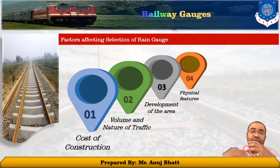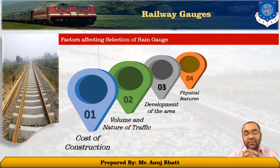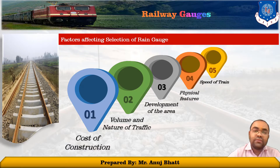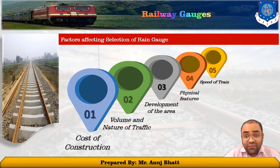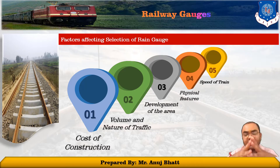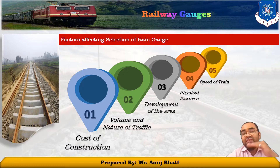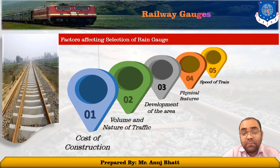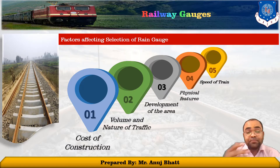This is how different terrain types affect the choice of the particular gauge. The last factor is the speed of the train. The speed of a train is almost proportional to the gauge, as speed is a function of wheel diameter, which in turn is limited by the gauge. The wheel diameter is generally kept as 0.75 times the regular gauge size. To maintain high speed, broad gauge is preferred.